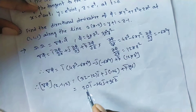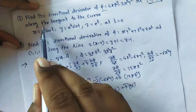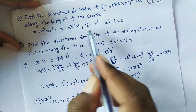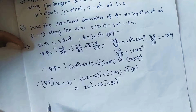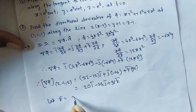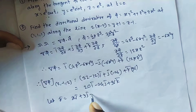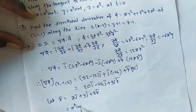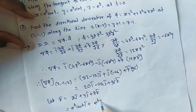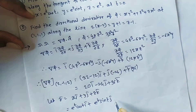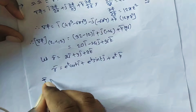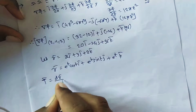Now we have ∇φ at (2, −1, 2). We need the directional derivative along the tangent to the curve at t = 0. For that we consider the position vector r̄ = xî + yĵ + zk̂, which gives r̄ = eᵗ cos t î + eᵗ sin t ĵ + eᵗ k̂. The tangent vector T̄ = dr̄/dt.